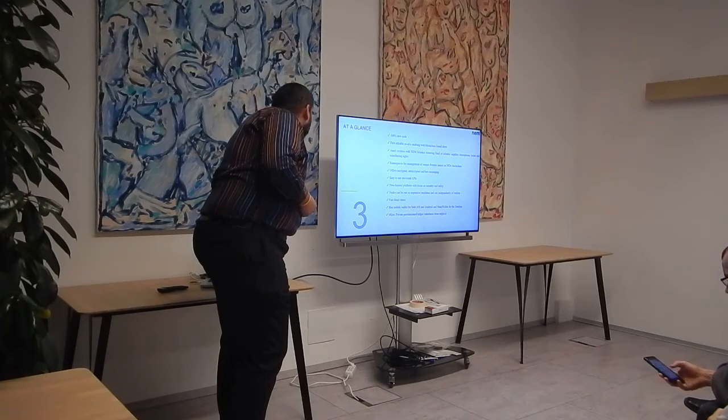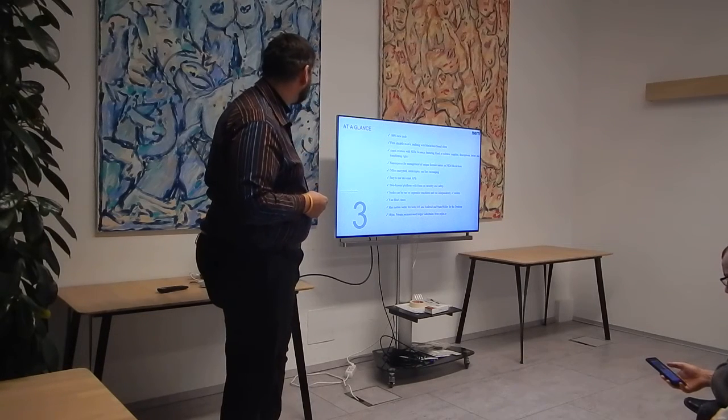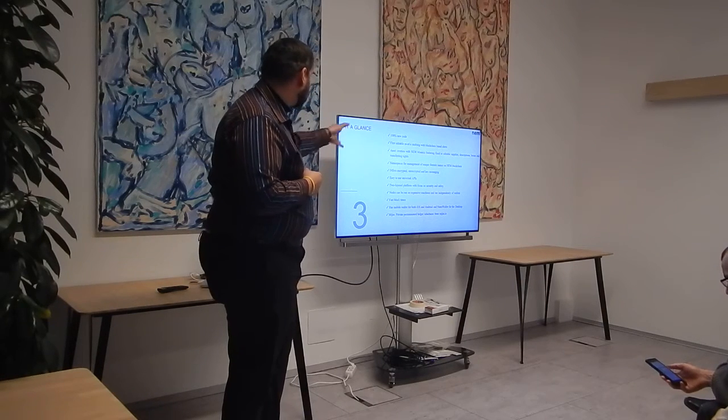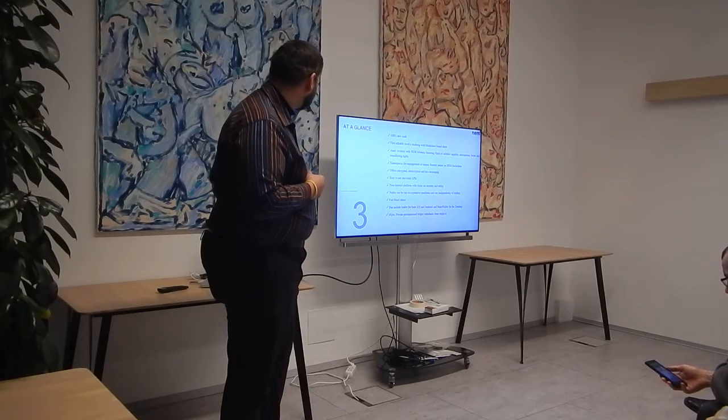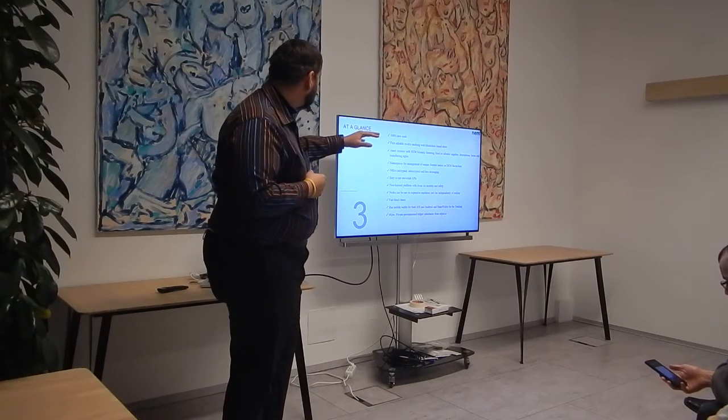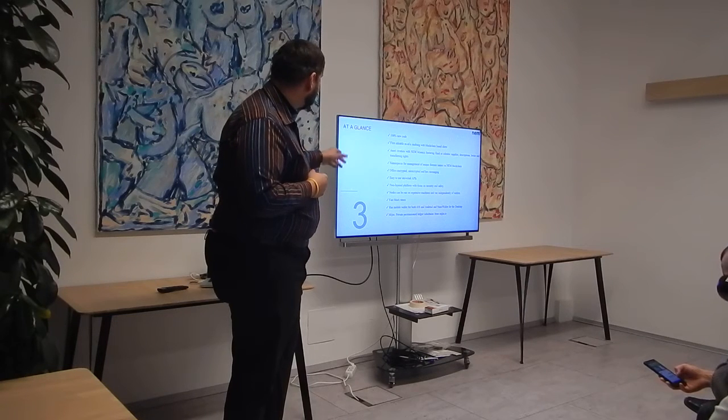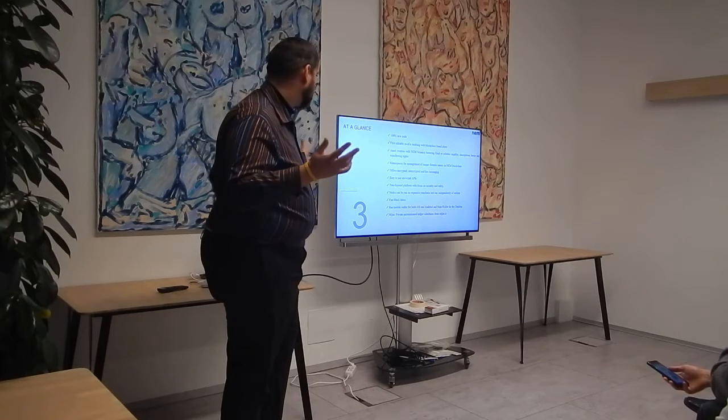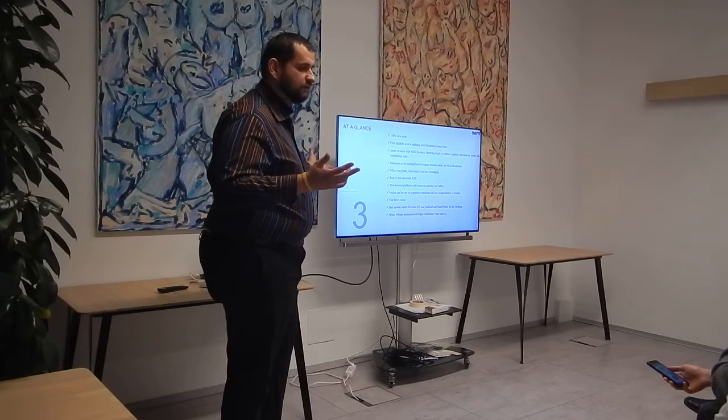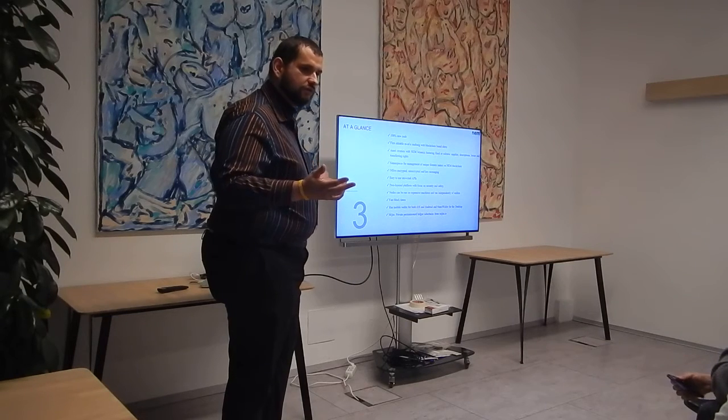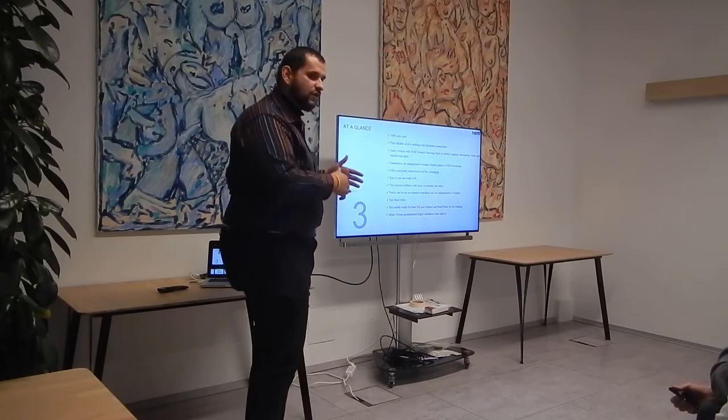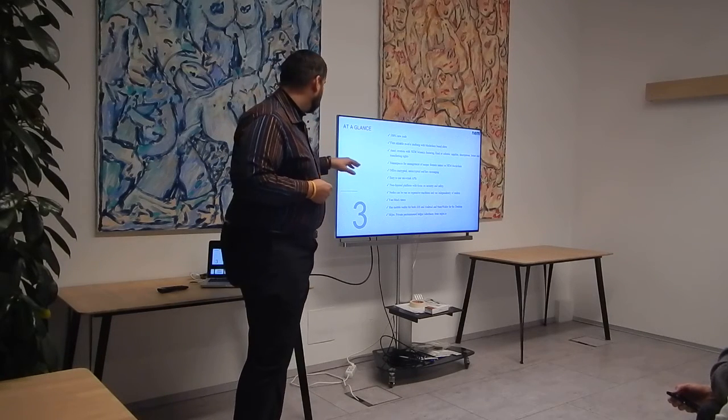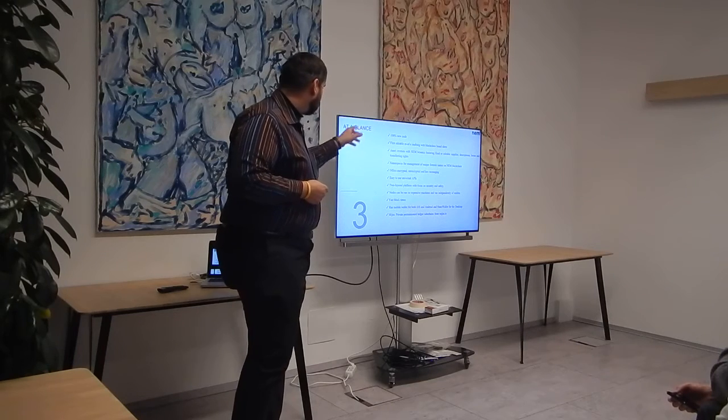So now let's compare this with the official presentation. 100% new code I did mention. This multi-signature, asset creation, namespaces and so on, we will see it soon. Then this messaging is, I'd say, standard. Every blockchain has it. But in fact Bitcoin doesn't have it. So if you are involved in a lot of altcoin projects, it's standard on-chain messaging, encrypted, unencrypted, and also in hex format.